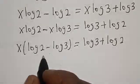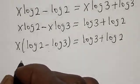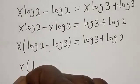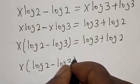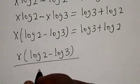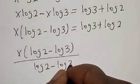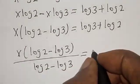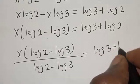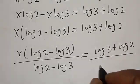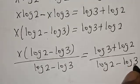Now let's divide both sides by log 2 minus log 3, because we are looking for the value of x. Then we have x is equal to log 3 plus log 2 over log 2 minus log 3.